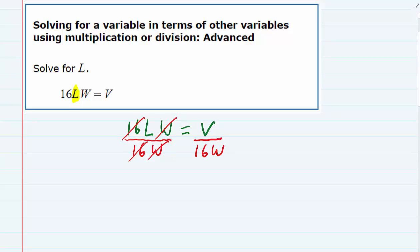And since those were being multiplied and I divided by each one of them, the 16 and the W, they now cancel leaving me with just the L on the left-hand side of our equation.